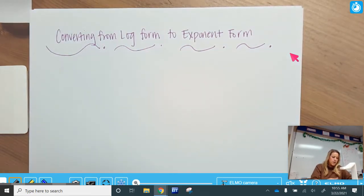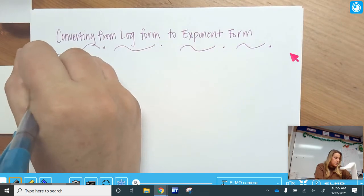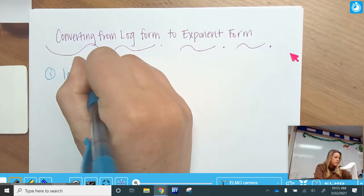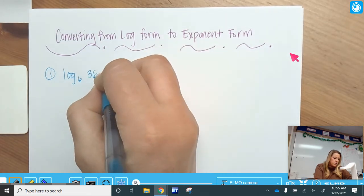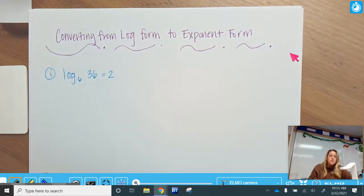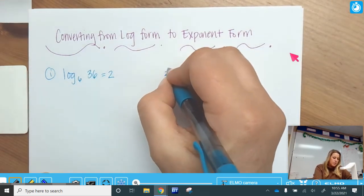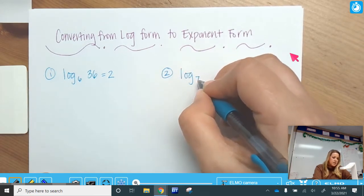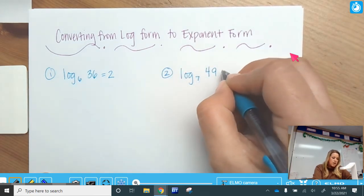So let's say we take log base 6 of 36 equals 2. Okay, so that's the first one, and number 2 is going to be log base 7 of 49 equals 2.